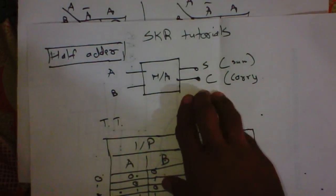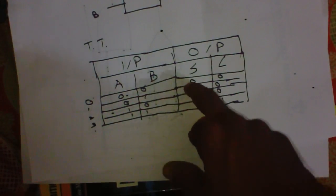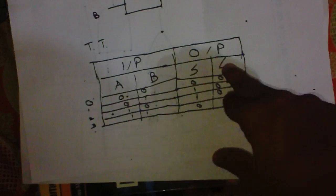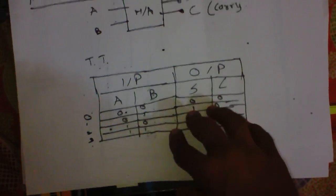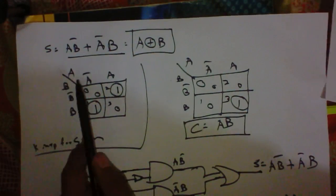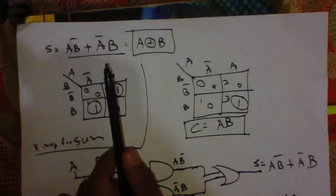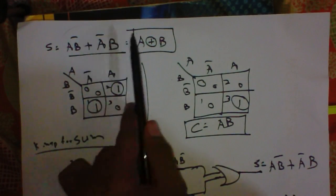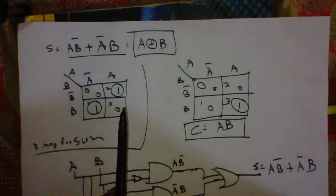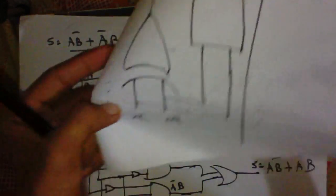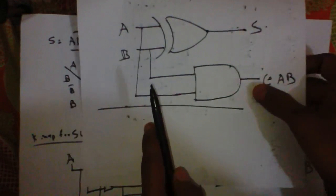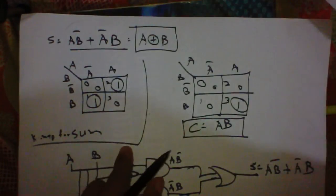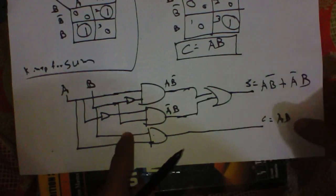To recap: the half adder has two inputs and two outputs — sum and carry. From the truth table, sum is active in only two states, and carry is active in only one state. From the truth table we obtained the Boolean expressions for each. The Boolean equation for sum is similar to an XOR gate. From the XOR gate expression we can easily draw the circuit, or alternatively use basic gates to draw the circuit.